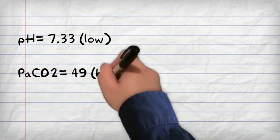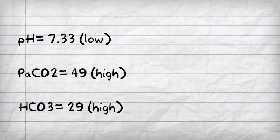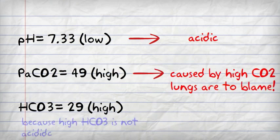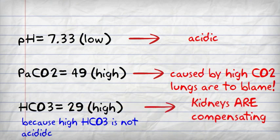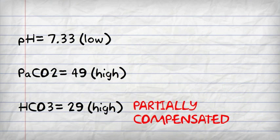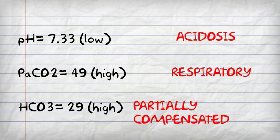Next, we still have a low pH, the CO2 is still high, but now the bicarbonate is also high. So we're still acidic, the CO2 is still high, so the lungs are still the problem because bicarbonate is not causing acidosis, it's basic. So the kidneys are compensating in this case, so it's partially compensated respiratory acidosis.